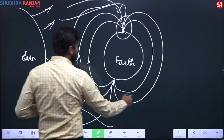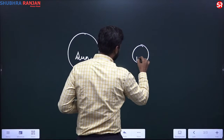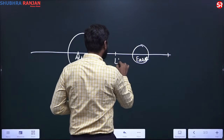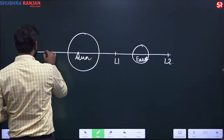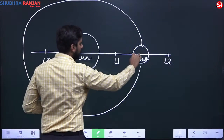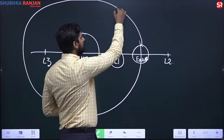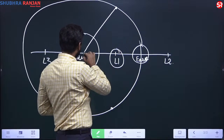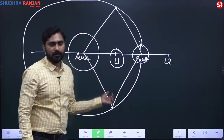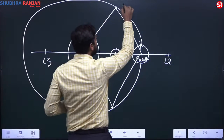There are five such Lagrangian points. If this is the sun and this is the earth, three of the points are on the line joining the sun and earth: L1, L2, and L3, which is behind the sun. Aditya is being placed at L1. The other points, L4 and L5, are at the apex of an equilateral triangle formed with the sun and earth as the base.